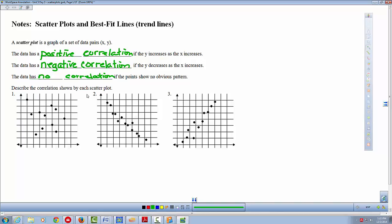So describe the correlation shown by each scatterplot. You might pause and just take a second and see if you can figure these out real quick and then come back. This one has no correlation. This one has, the y's are decreasing. Y's are going down the y axis as we go up the x axis. So that's a negative correlation. Here, our y's are getting bigger as our x's get bigger, which is a positive correlation.